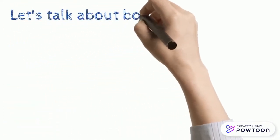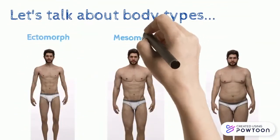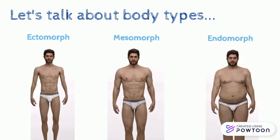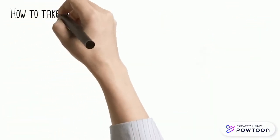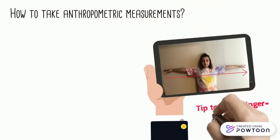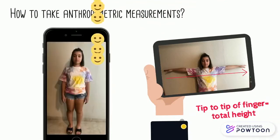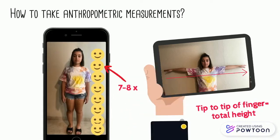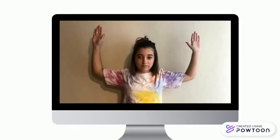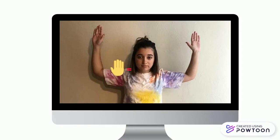Scientists divided the human shape into three main body constitutions: ectomorph, mesomorph, and endomorph. Did you know that if you extend your arms horizontally and measure from one fingertip to the other, you get a measurement equal to your height? And if you multiply the measurement of your head by seven or eight times, you also get your height. Other measurements: your hand equals the length of your neck, and your foot equals the length of your forearm.